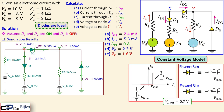Looking at the results one by one: ID1 from simulation is 2.41 milliamps compared to our calculated 2.40 milliamps — very close. ID2 is 5.303 milliamps versus our 5.3 milliamps — excellent agreement. ID3 is minus 1.002 nanoamps, essentially zero, confirming D3 is not conducting. VX is 2.287 volts, which rounds to 2.3 volts, and VY is 1.606 volts, rounding to 1.6 volts.